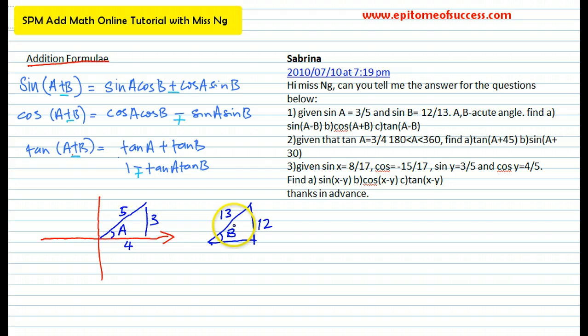Now, when you have the triangle, you complete all the sides. This is 5 and that's 4. Now you may answer every single question that there is. Say sine A minus B, according to the formula, sine A minus B would be this. Let's do question 1A now. Sine A minus B, according to the formula, would be sine A cos B minus cos A sine B. That's what the formula says.